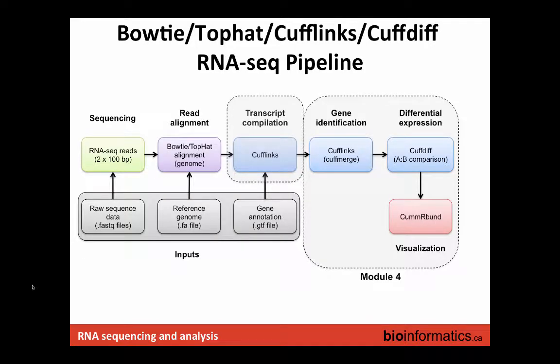So we are going to take a coffee break before starting the lab exercise. You guys are moving on to this part of the workflow. We're going to use CuffLinks to do transcript compilation — basically to define the transcripts in each of your samples — and then CuffMerge and CuffDiff to identify the genes and assign expression levels to them. And then in this module we're also going to do CummeRbund for visualization.